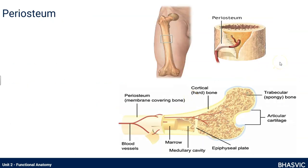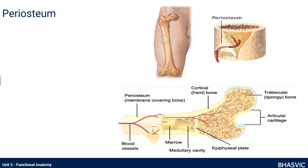First of all, the periosteum. If we take this femur, this long bone here, and look at it as a cross section, you can see this outer coat — this outer fibrous layer is the periosteum. It's a protective membrane. You need to know that the periosteum is a fibrous protective membrane that covers the outside of a bone.